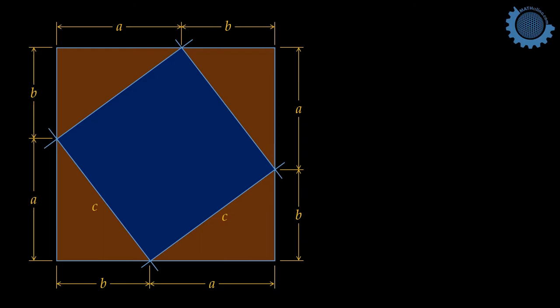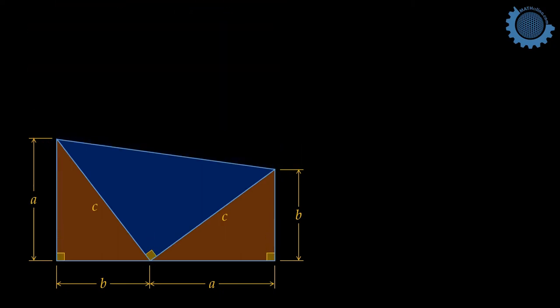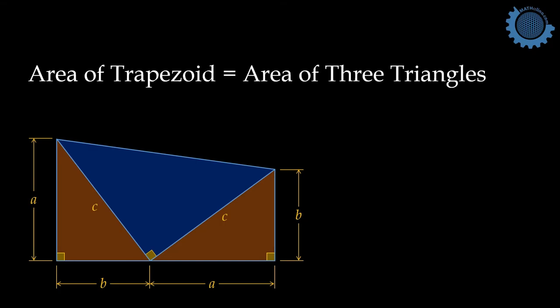Basically, what President Garfield did is a revision of Pythagoras' work. He simply divided the square into 2 trapezoids. The area of the trapezoid is equal to the area of the three triangles. I leave to you how to derive the Pythagorean relations from this figure.